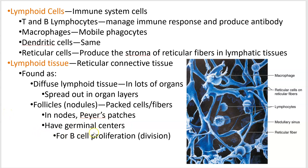Germinal centers are found here, which are places where B cells make many copies of themselves. This is important — once a B cell gets imprinted by a pathogen, making copies of it produces many, many copies of the cell that are all imprinted on that pathogen, making it tough on the pathogen.